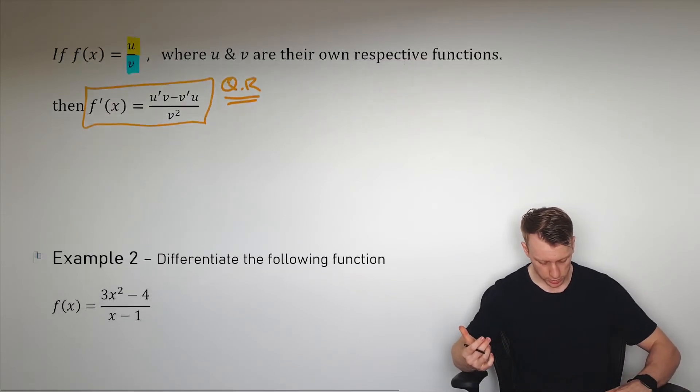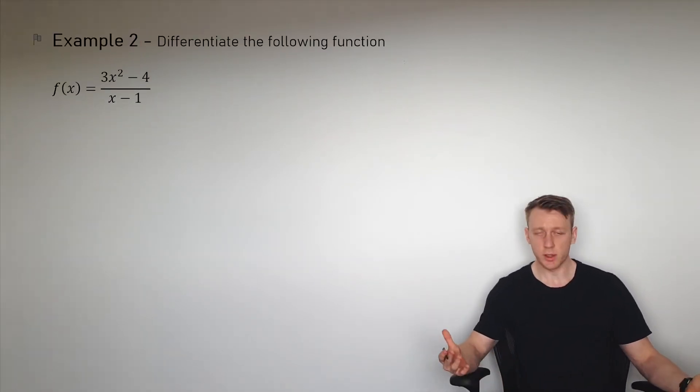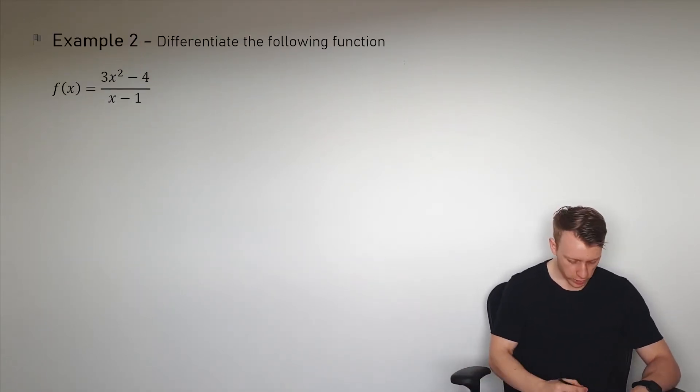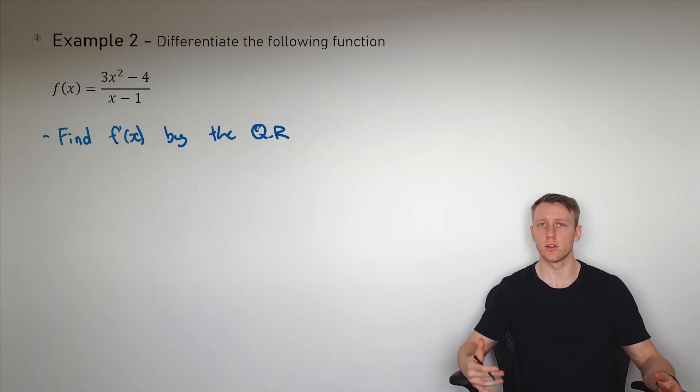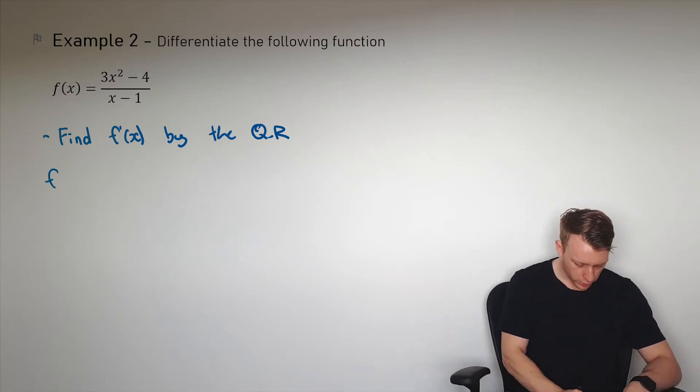Let's just apply it. Here we're given a function that says differentiate the following function. So I'm going to write find f'(x), which is the derivative by the quotient rule. I know that the quotient rule is given by u'v minus v'u over v².